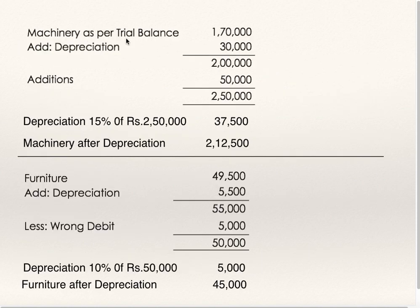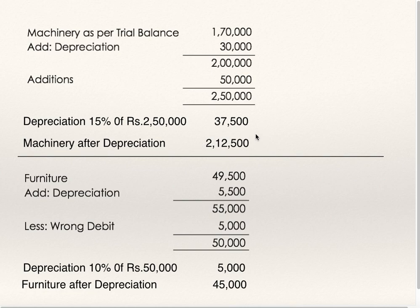I will show you the working note. Machinery as per trial balance is 1,70,000. Add back depreciation 30,000 to get the opening balance of machinery which is 2,00,000. Additions of 50,000 were not recorded in machinery account. So machinery total is 2,50,000. On that, depreciation at 15% is 37,500. Machinery after depreciation is 2,12,500, which is to be shown on the asset side. And 37,500 depreciation on machinery is to be debited to profit and loss account.